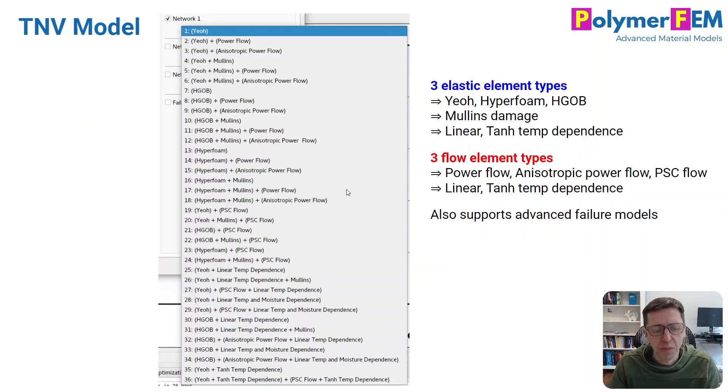So here's a complete list as of today of the different types of networks that are available. Each network will have one out of three hyperelastic components. There's a Yeoh hyperelastic component, a hyperfoam model for foam-like materials, and there's an anisotropic hyperelastic model that I call HGOB, Holzapfel-Gasser-Ogden and the Bergstrom version of it. So it's a model that I developed. And each of these hyperelastic components can have damage to it, Mullins damage specifically, and they can be temperature dependent in the TNV model, linear temperature dependence, and also a more non-linear temperature dependence.